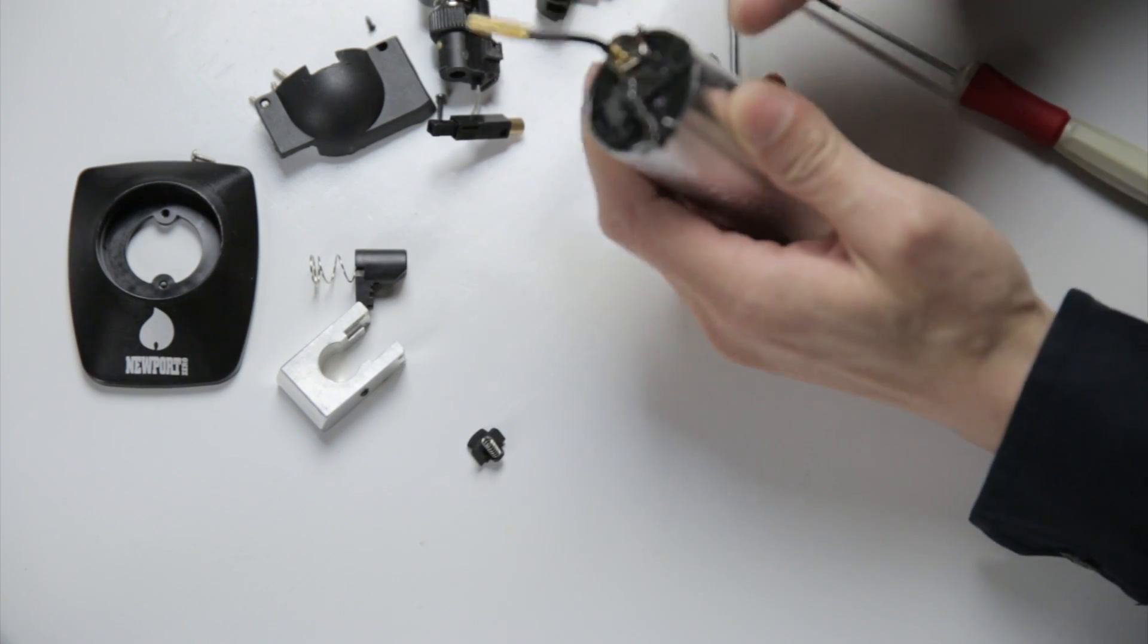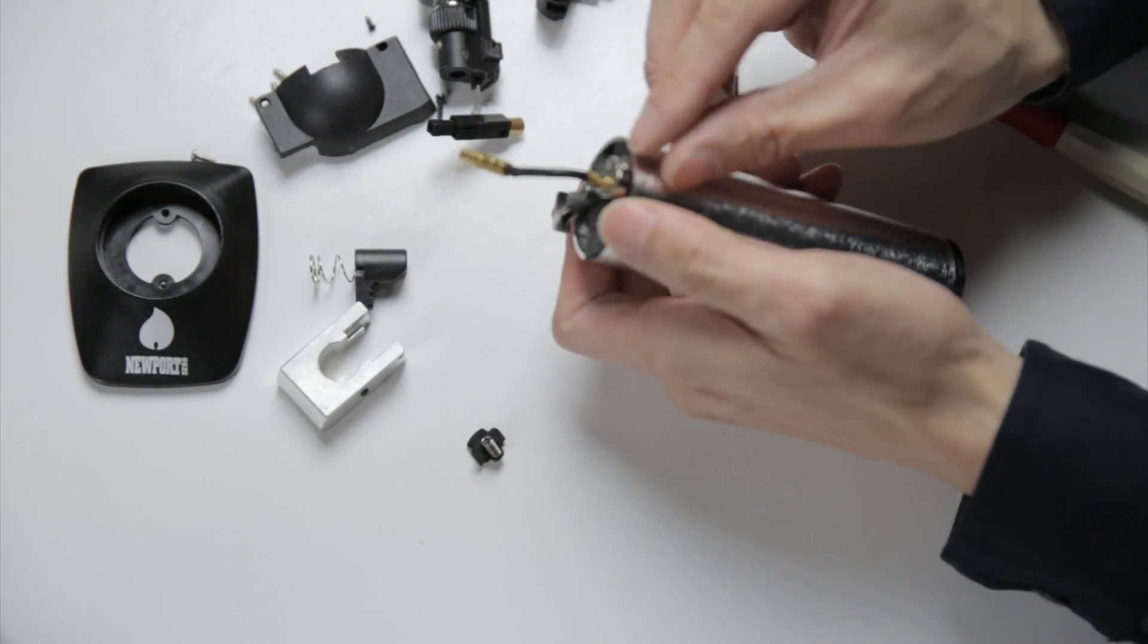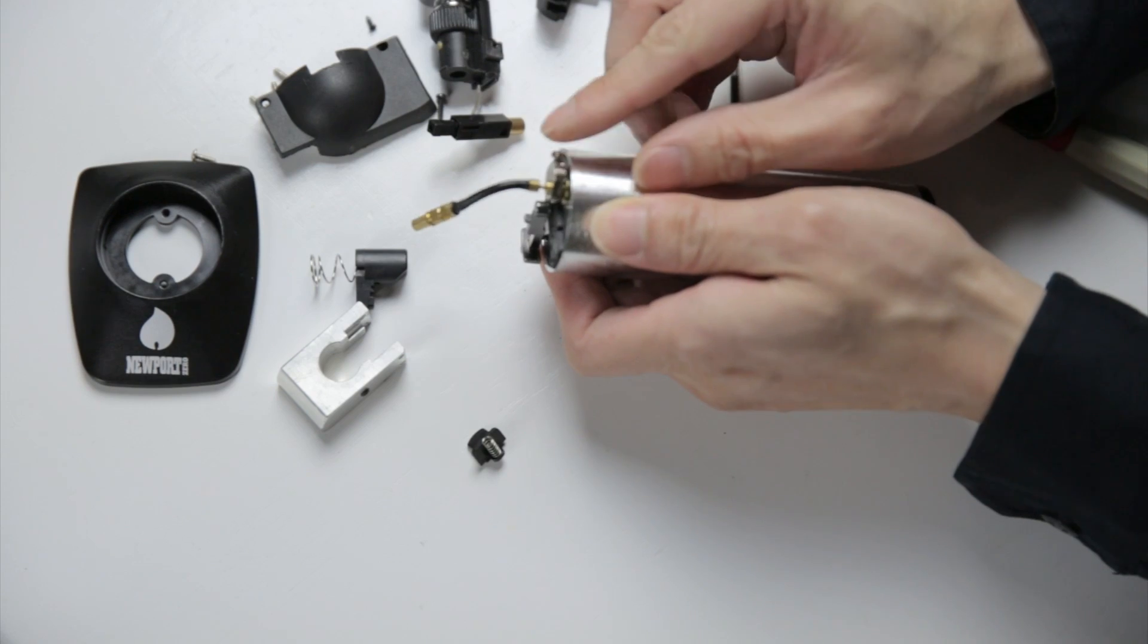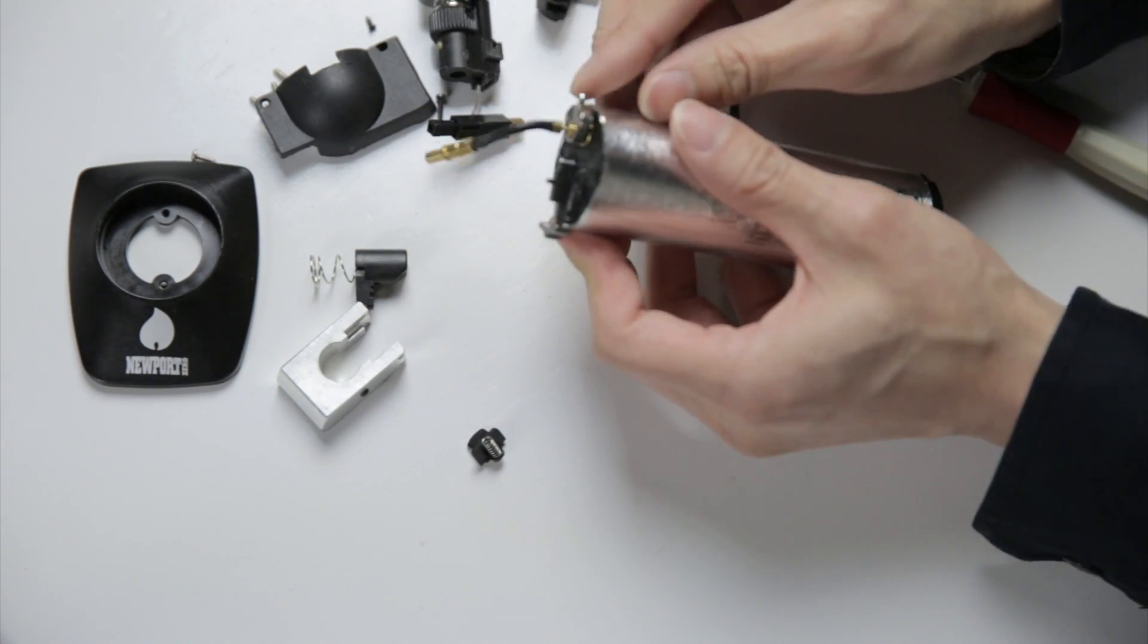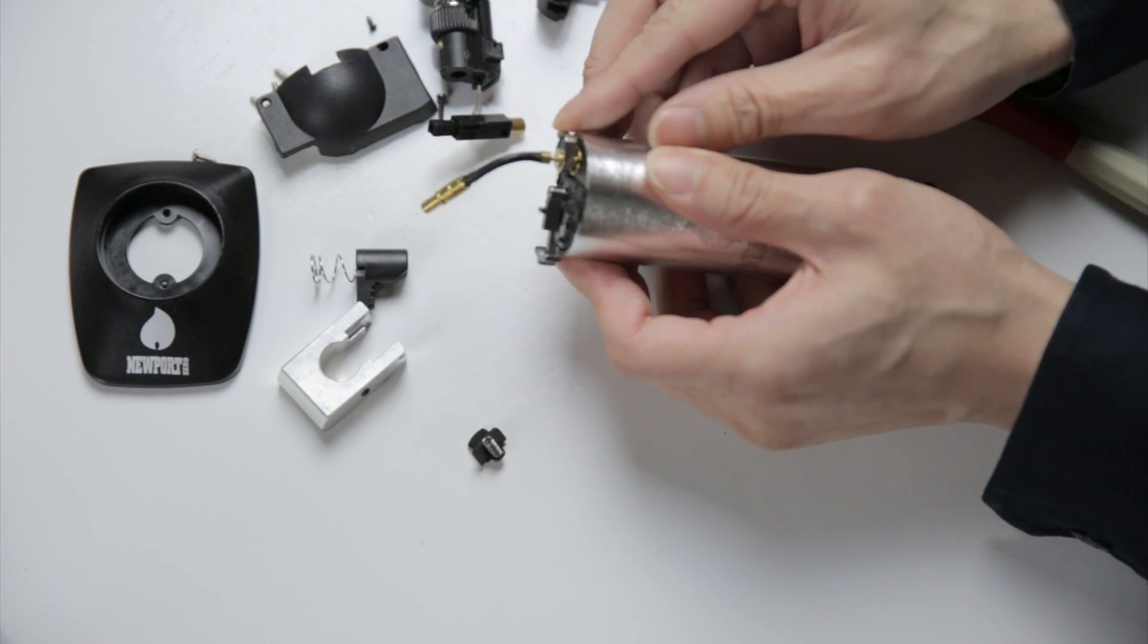So the thing that holds the gas is actually not a metal container, it's this plastic piece right here. This is the adjustment for the fuel. If you pull this up, the fuel will come out, like so. This is just essentially what I call the blade length here.